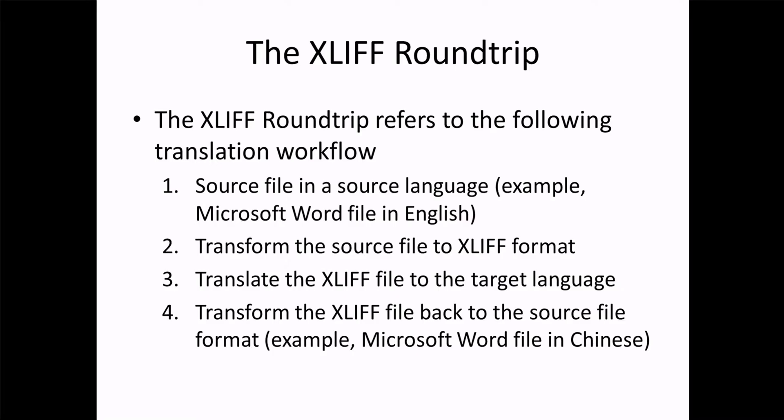One of the things we talk about a lot is the XLIF roundtrip. With the XLIF roundtrip, you start off with a source file in a source language — for example, Microsoft Word in English. You transform that source file into the XLIF format. Then you translate the XLIF to the target language, and you transform the XLIF back to the source format. The result would be, for example, a Chinese Microsoft Word file.